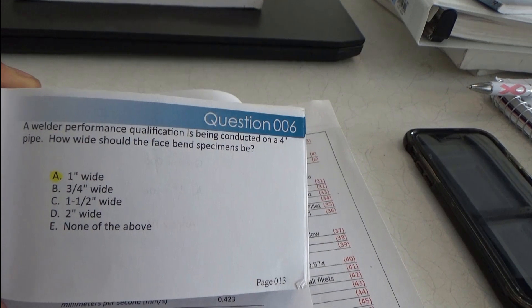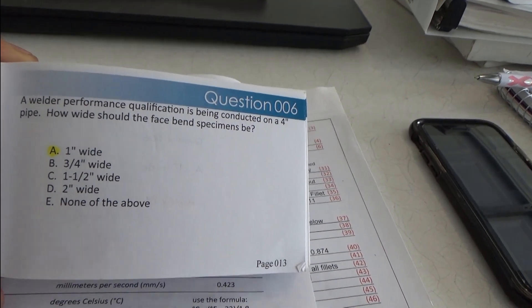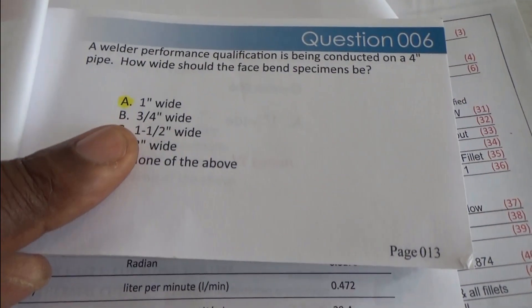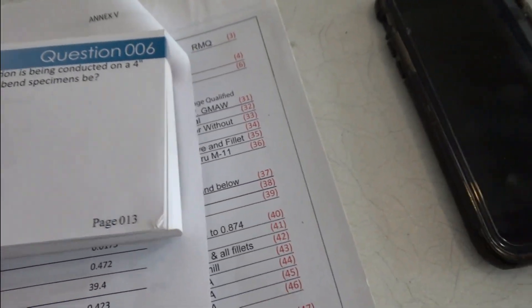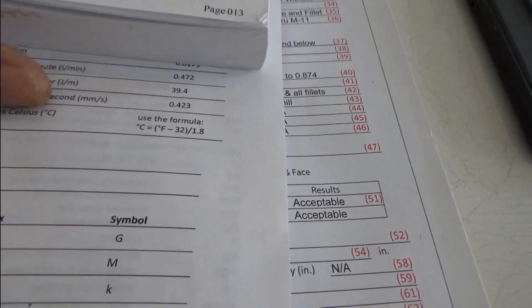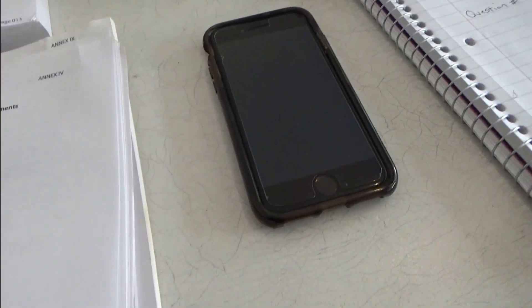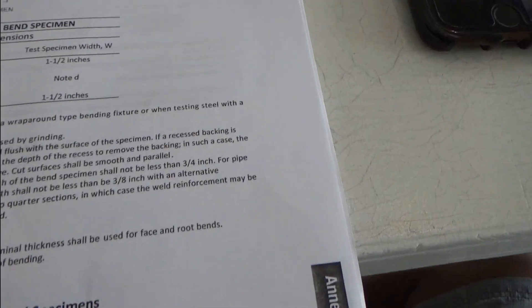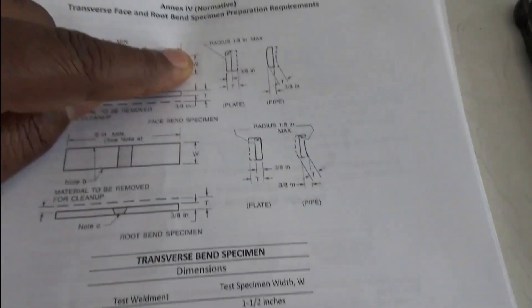A welder performance qualification is being conducted on a four-inch piece of pipe — how wide should a face bend specimen be? You shouldn't have to look that up if you've studied your book of specs. The answer is one inch. You can verify it on page 41 of the book of specs, where the width is clearly listed.